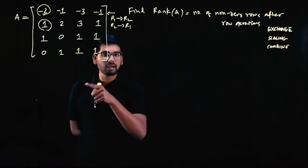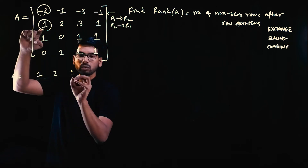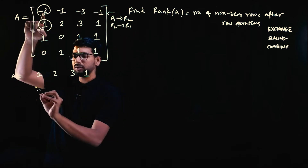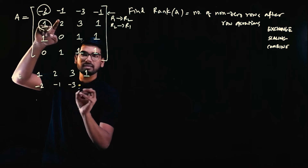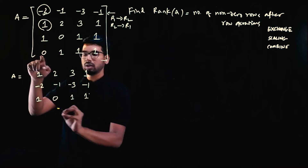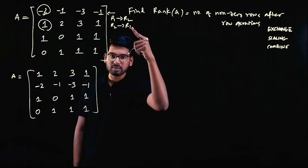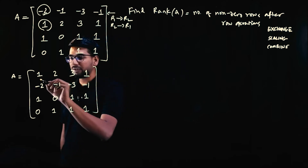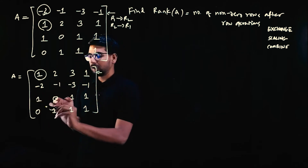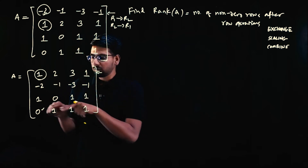After the row exchange operation, the matrix will be: first row becomes the old row 2, that is [1, 2, 3, 1]. Row 2 becomes the old row 1, that is [-2, -1, -3, -1]. Rows 3 and 4 remain unchanged: [1, 0, 1, 1] and [0, 1, 1, 1].